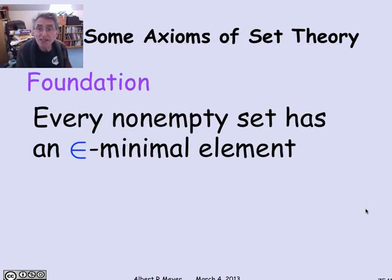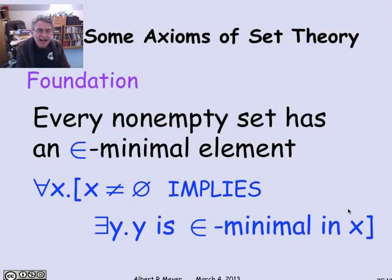The basic axiom of ZF, called the foundation axiom, simply says that every non-empty set has a membership minimal element. This is actually a generalization of the well-ordering principle that says that every non-empty set of non-negative integers has a least element. Just as the well-ordering principle for integers implies that you can't have an infinite decreasing sequence of non-negative integers, the foundation axiom implies that you can't have an infinite sequence of sets, each of which is a member of the previous one. Here is a formula asserting foundation: for every x, if x is not empty, that implies there is a y such that y is membership minimal in x.